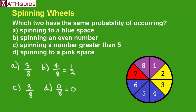Alright, so it looks like the two that are equal are A and C. A and C have the same probability of occurring. Go back to mathguide.com and check out more Problem of the Day videos. Take care.